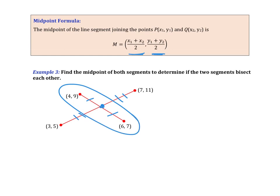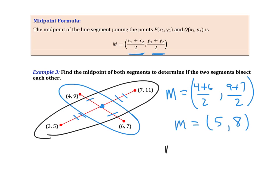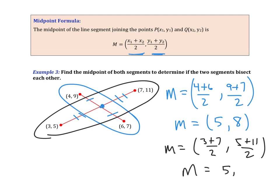To find the midpoint of the first line, I add the x-values — 4 plus 6 divided by 2 — and the y-values — 9 plus 7 divided by 2 — giving the midpoint (5, 8). Doing the same for the second line: 3 plus 7 divided by 2, and 5 plus 11 divided by 2, also gives the midpoint (5, 8). Therefore the two lines do bisect each other because they share the same midpoint.